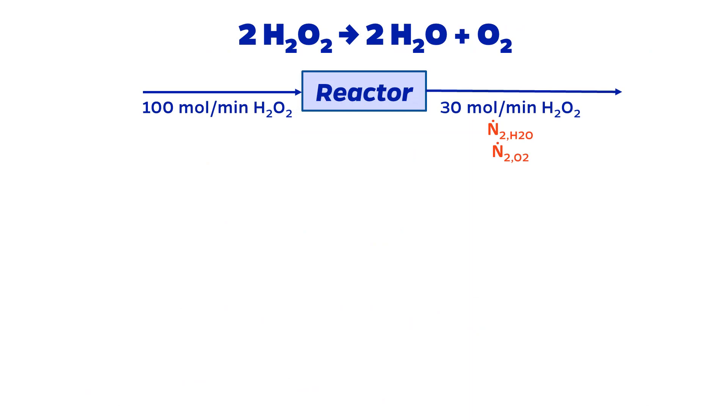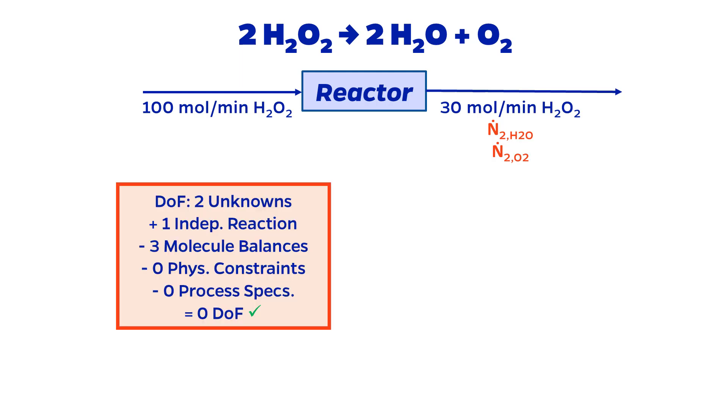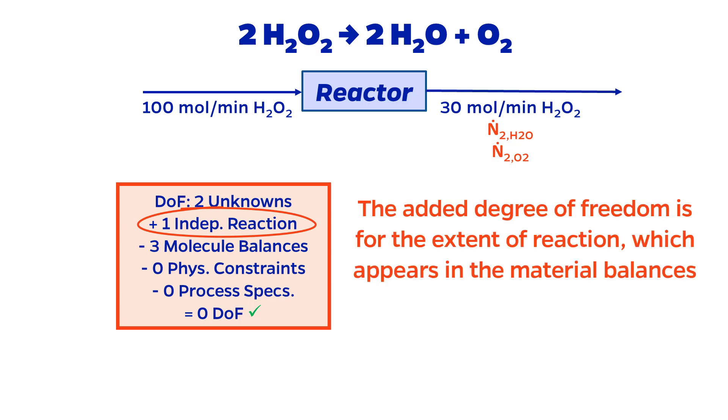One more time, let's look at the brief example where 100 moles per minute hydrogen peroxide enters a reactor and 30 moles per minute hydrogen peroxide exits the reactor, and we want to calculate the moles of water and oxygen out. The extent of reaction degree of freedom analysis is identical to the molecular method, where we add an unknown for each independent reaction. In this case, it's easier to see that the extra unknown is for the extent of reaction, which will appear in the material balances.